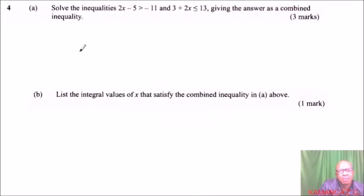Okay, this is question number 4, part A. Solve the inequality 2x minus 5 is greater than minus 11 and 3 plus 2x less than or equals to 13, giving the answer as a combined inequality.